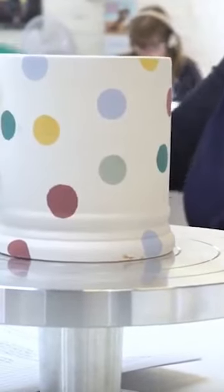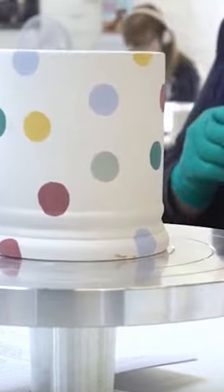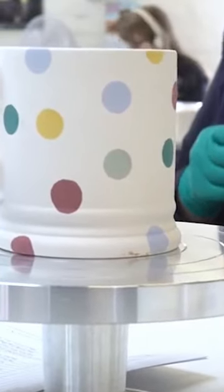For the famous polka dot pattern, hand-cut sponges are dabbed into paint and applied by hand. Each decorator chooses their pattern before it is sent to be glazed.